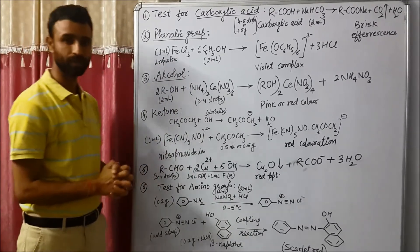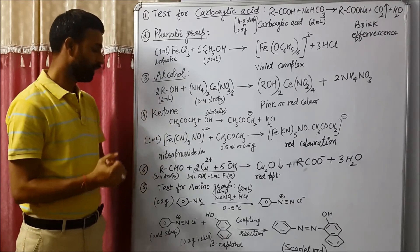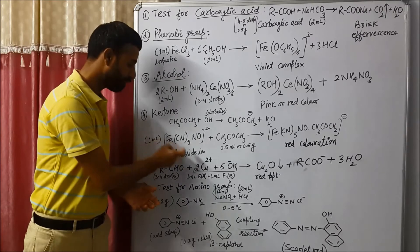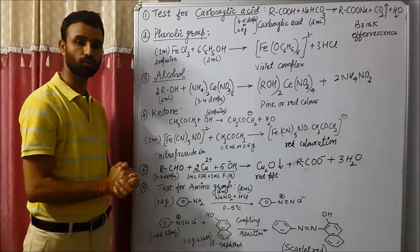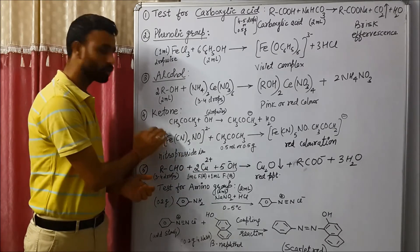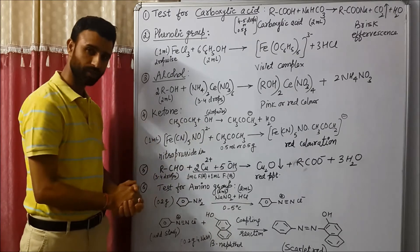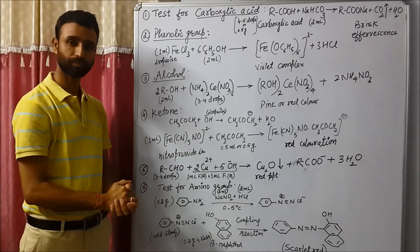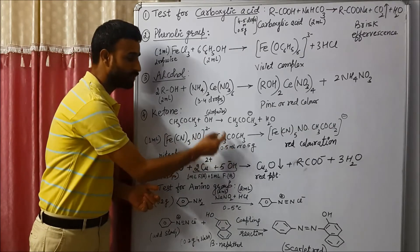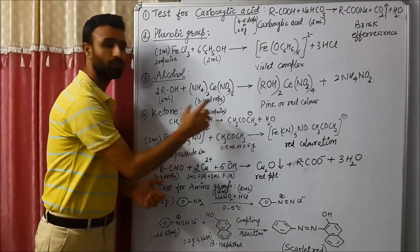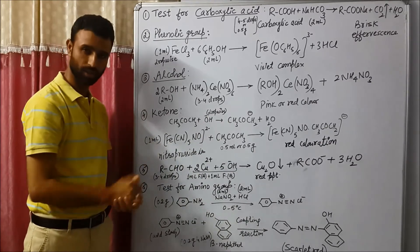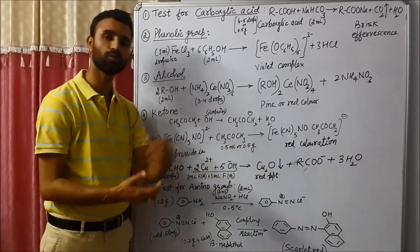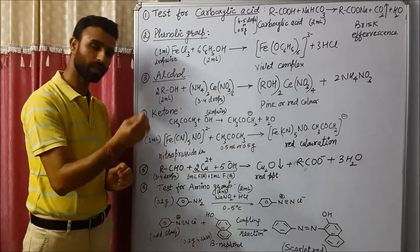Then come to ketone. In case of ketone, first what we do, we take 1 ml of sodium nitroprusside. This is called sodium nitroprusside test. Take 1 ml of sodium nitroprusside. And add 0.5 ml of the given organic liquid or organic compound. If it is solid, then add 0.5 gram. If it is liquid, add 0.5 ml approximately.